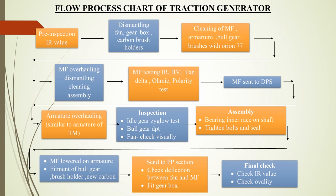Then assembly is done where the bearing inner race on the shaft is fitted, the top cover is fitted, net is applied, and it is painted. The magnet frame is lowered onto the armature slowly via a crane, the bull gear and brush holders are fitted, and the gap between the commutator and holder is adjusted. After that it is sent to the power pack section wherein the deflection between the fan and the magnet frame is checked very minutely and the gearbox is fitted. The Traction Generator is then sent from the power pack section back to the Traction Generator section for final checking. The internal resistance value is checked, ovality is tested — which must be a maximum of 0.002 — and the overhauling is completed.